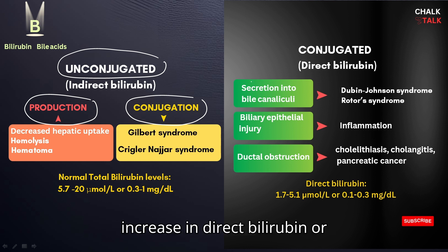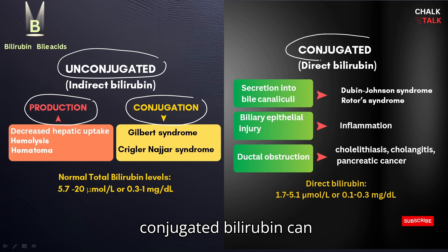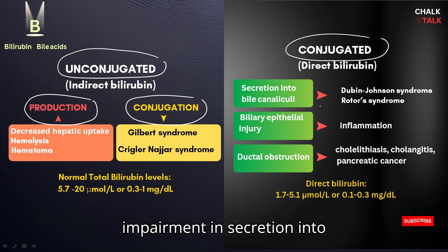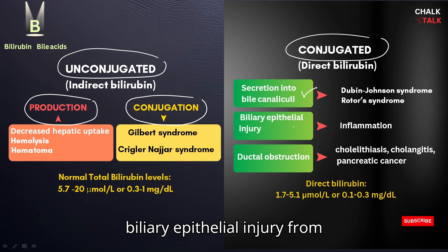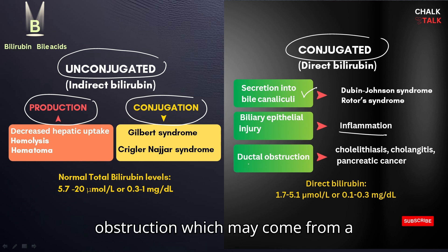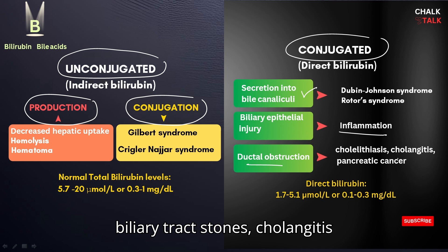On the other side, an increase in direct or conjugated bilirubin can be attributed to impairment in secretion into the bile canaliculi, or biliary epithelial injury from inflammation or toxins, infections, and ductal obstruction which may come from biliary tract stones, cholangitis, or pancreatic cancer.